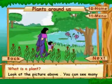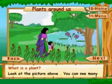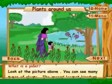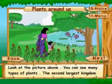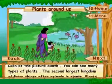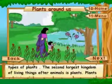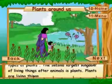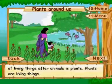What is a plant? Look at the picture above. You can see many types of plants. The second largest kingdom of living things after animals is plants. Plants are living things.